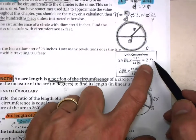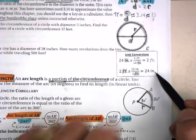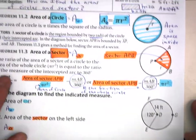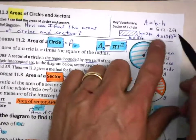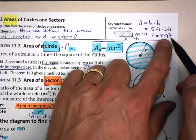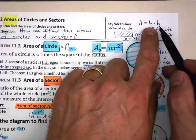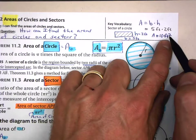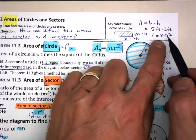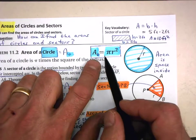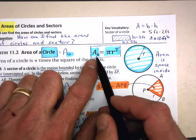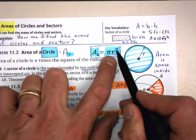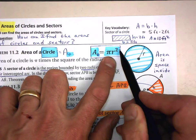Area will always have the units of a length squared, whereas circumference has the units of just a length by itself — like feet or inches that we did back in 11.1. Remembering that area is a length times a length gives us a squared unit. So when you see area, you should think squared, and that will help you remember that the equation for the area of a circle is πr².